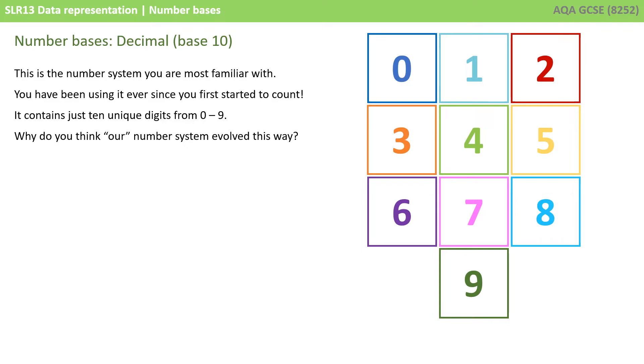Let's start with the base 10 number system known as decimal, and this is the number system that you are most familiar with. You've been using it ever since you very first started to count. As you know, it contains just 10 unique digits, ranging from 0 to 9.